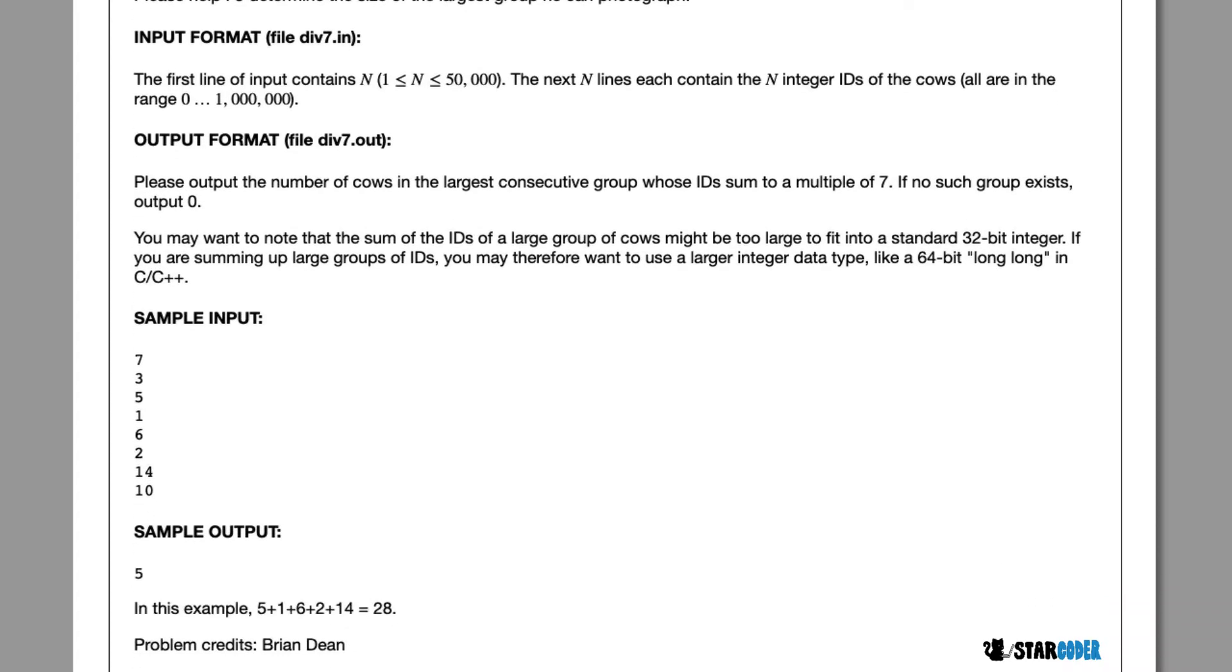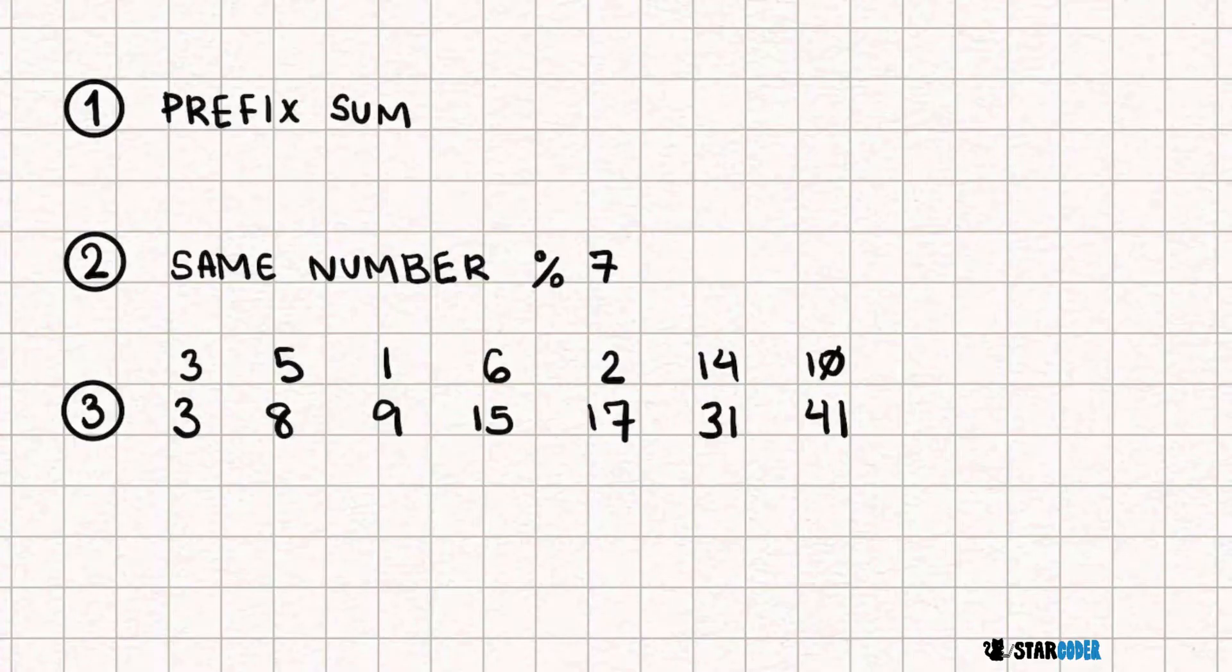So let's look at the algorithm for this question. We can solve this question using prefix sum. What prefix sum is able to do is basically give us the sum of a range. So if I have the example array here, when we apply prefix sum, we are able to find different ranges.